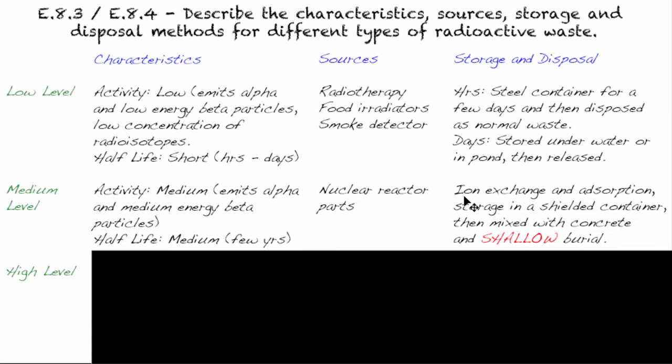In order to get rid of those, what we do is ion exchange and adsorption. This is fairly similar to flocculation that was looked at in waste treatment for water. Basically, the radioactive material will adsorb to the surface of some substance that will then sink out, and then they can remove that radioactive material. They'll then store it in a shielded container. When we say shielded, we generally mean that there's something thick and dense around it, like a piece of lead.